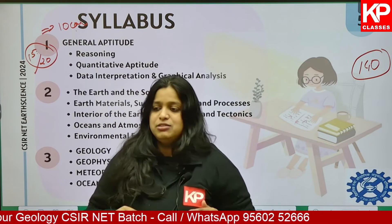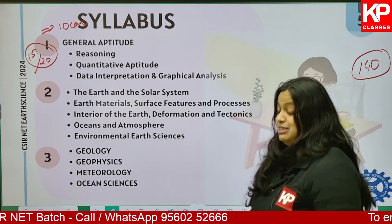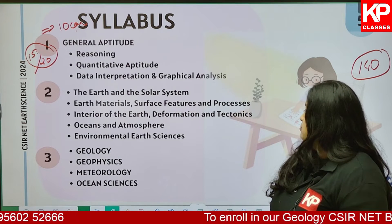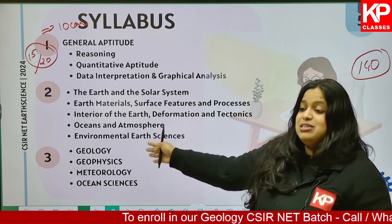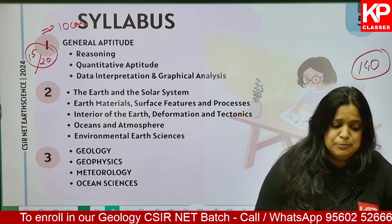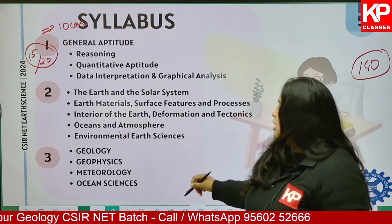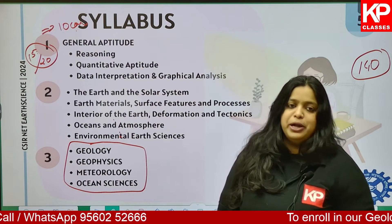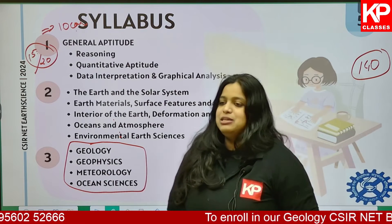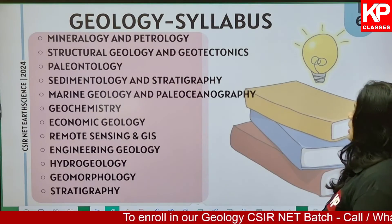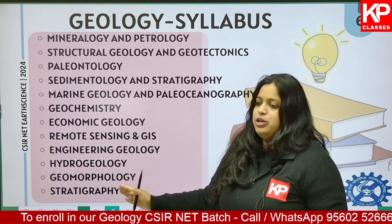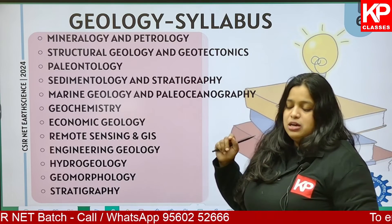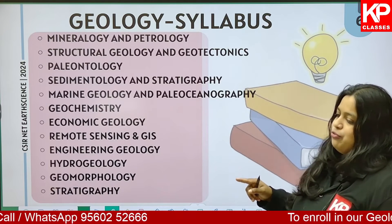In Part B, it's a 2-mark question section and comparatively much easier than Part C. Questions will be from Earth and solar system, earth materials, surface features, and processes of Earth — these are basics of geology, ocean science, planetary science, and atmospheric science. If you are thorough with the topics required for Part C, you will be able to solve Part B also, so you don't need to prepare separately for Part B.